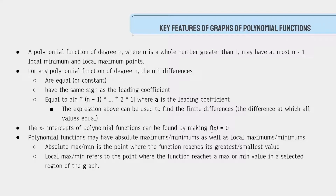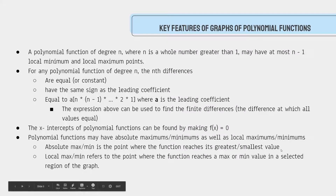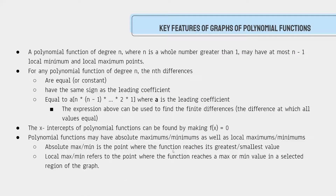This might be a little bit confusing, so let's elaborate. The absolute max and min is the point where the function reaches its greatest and/or smallest value. The local maximum refers to the point at which the function reaches the max or minimum in a selected region of the graph.